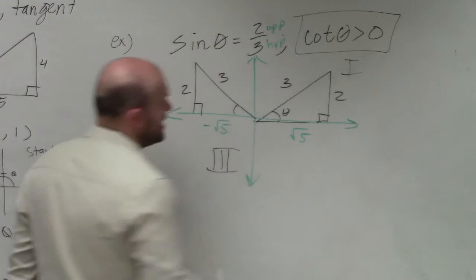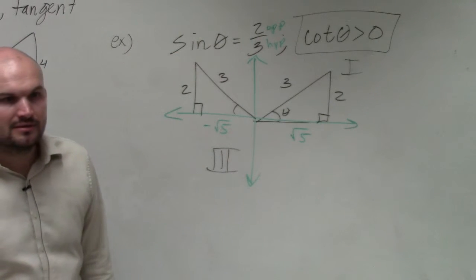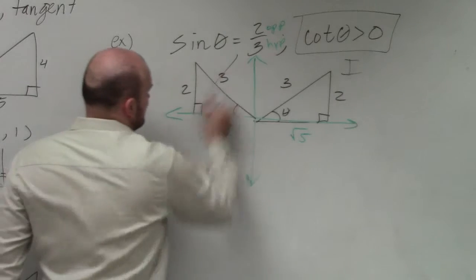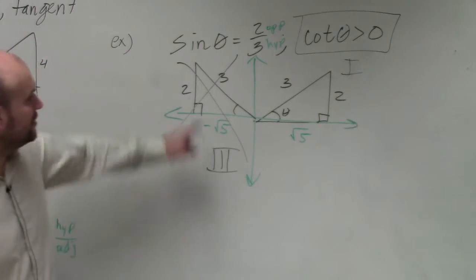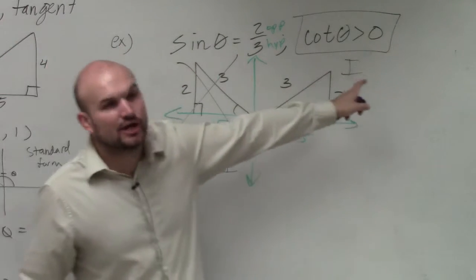Well, do we have a triangle on the third and the first? Yeah, on the first. So guess what? That is not our triangle, given our equation and our constraint.